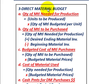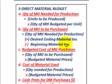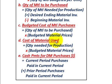For the direct materials budget, number three, there are five parts. A: quantity of material needed for production equals units to be produced times quantity of material budgeted per unit. B: quantity of material to be purchased equals quantity needed for production, plus desired ending material inventory, minus beginning material inventory. C: budgeted cost of material purchases equals quantity to be purchased times budgeted material prices. D: cost of material used equals quantity needed for production times budgeted material prices. E: cash payments for direct material purchases equals current period purchases paid in the current period, plus any prior period purchases paid in the current period.